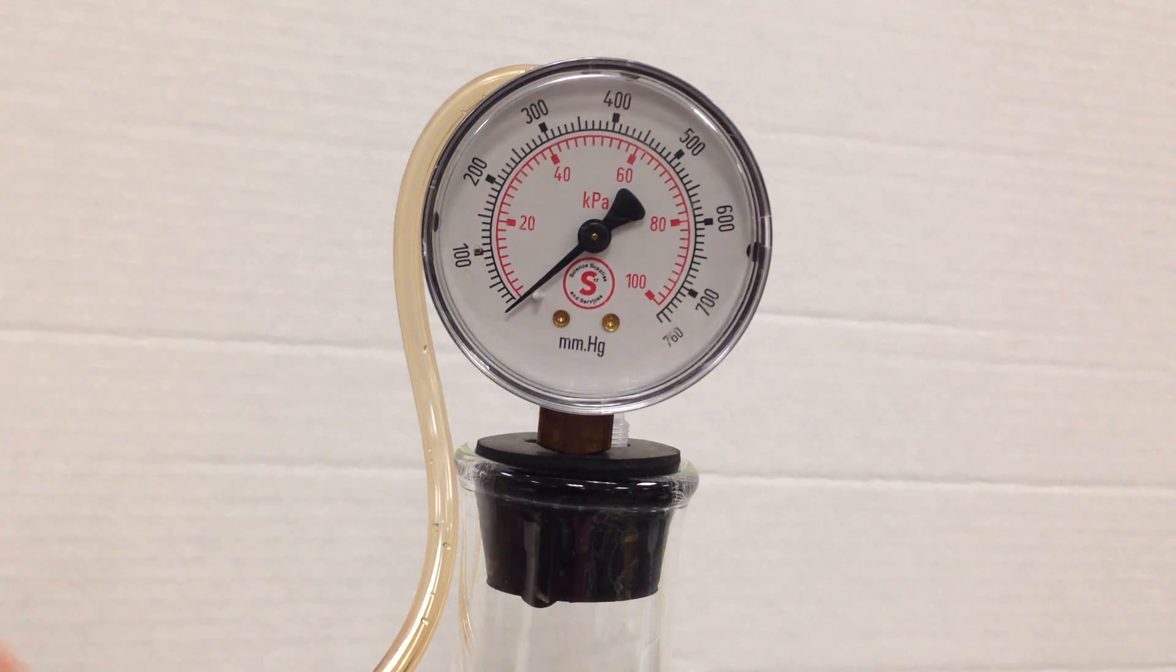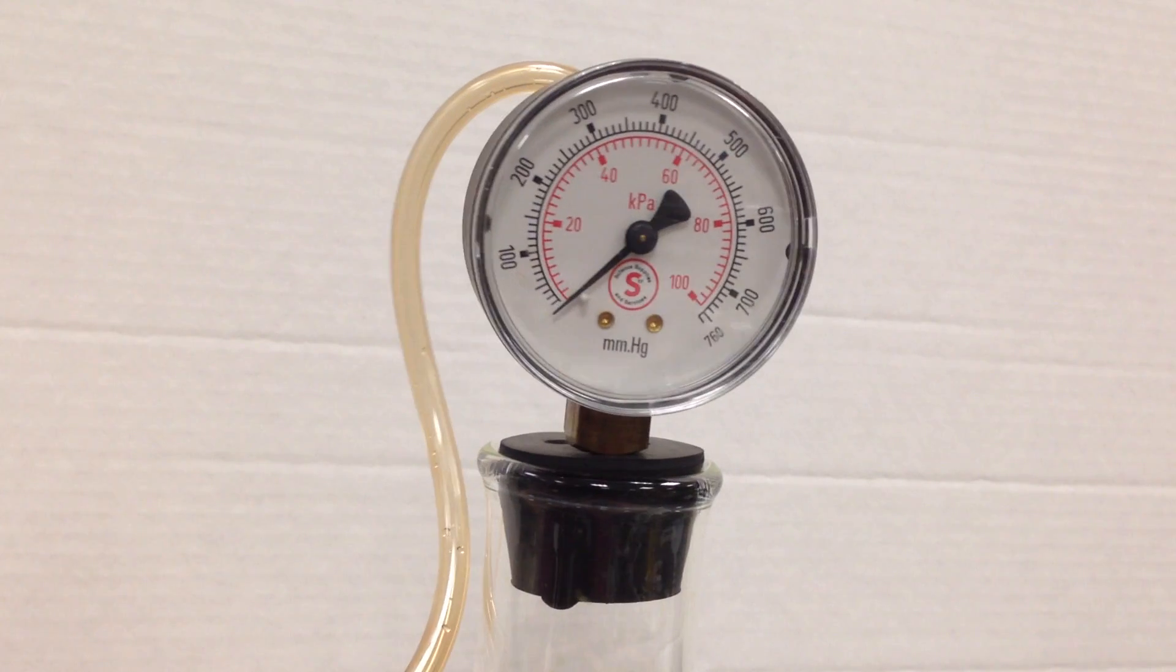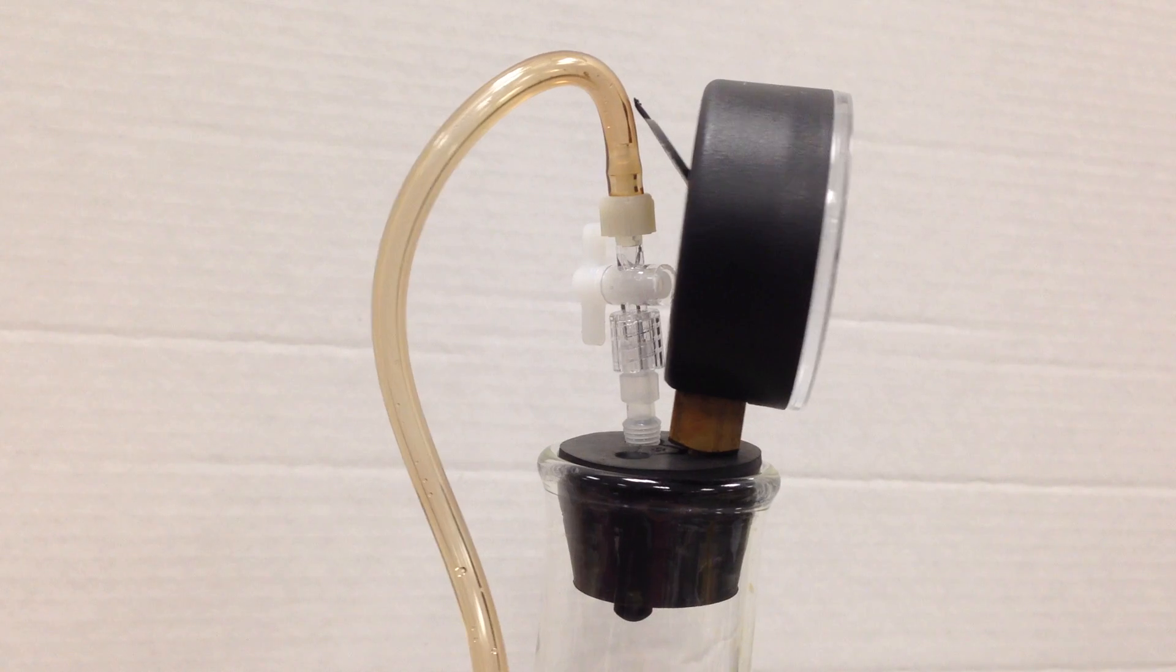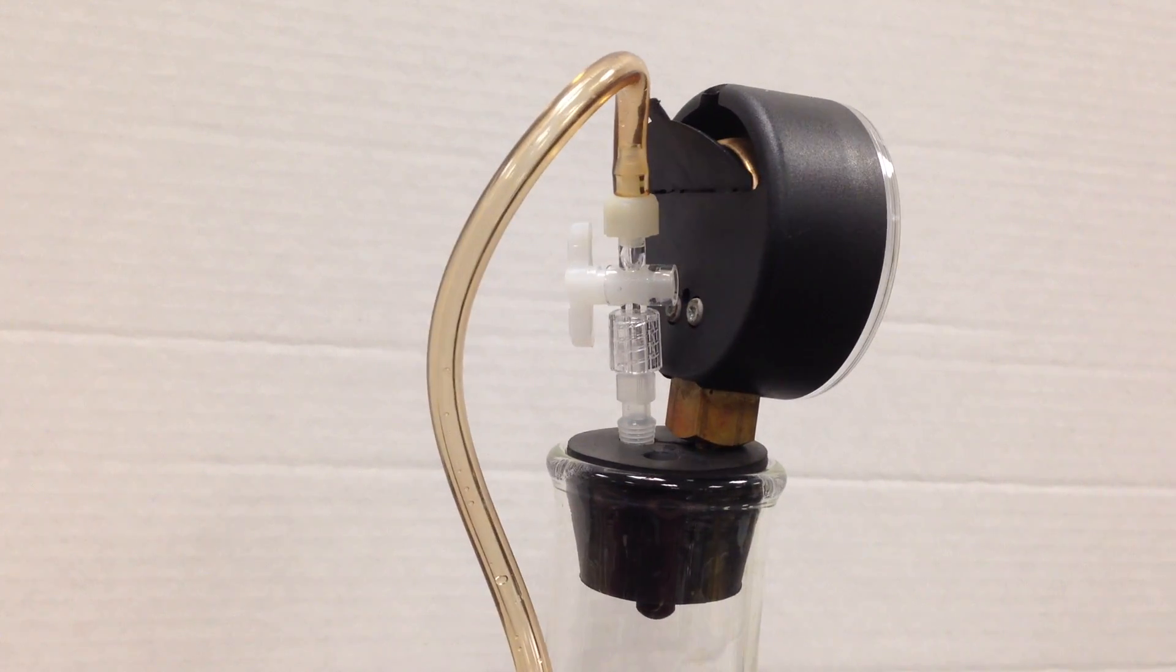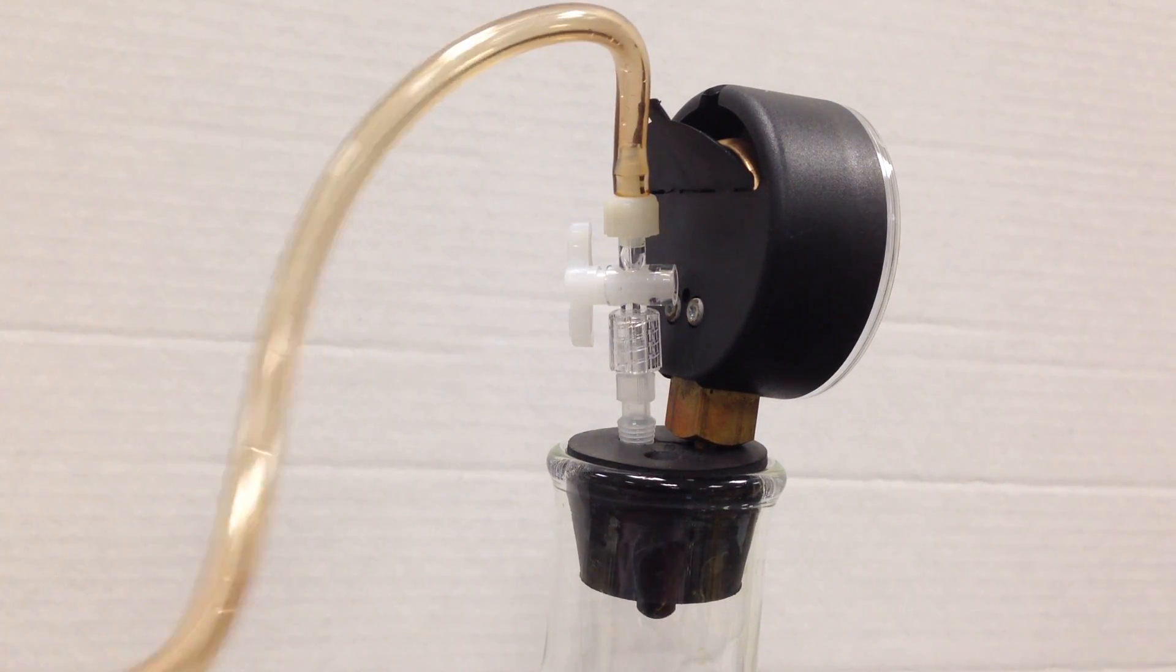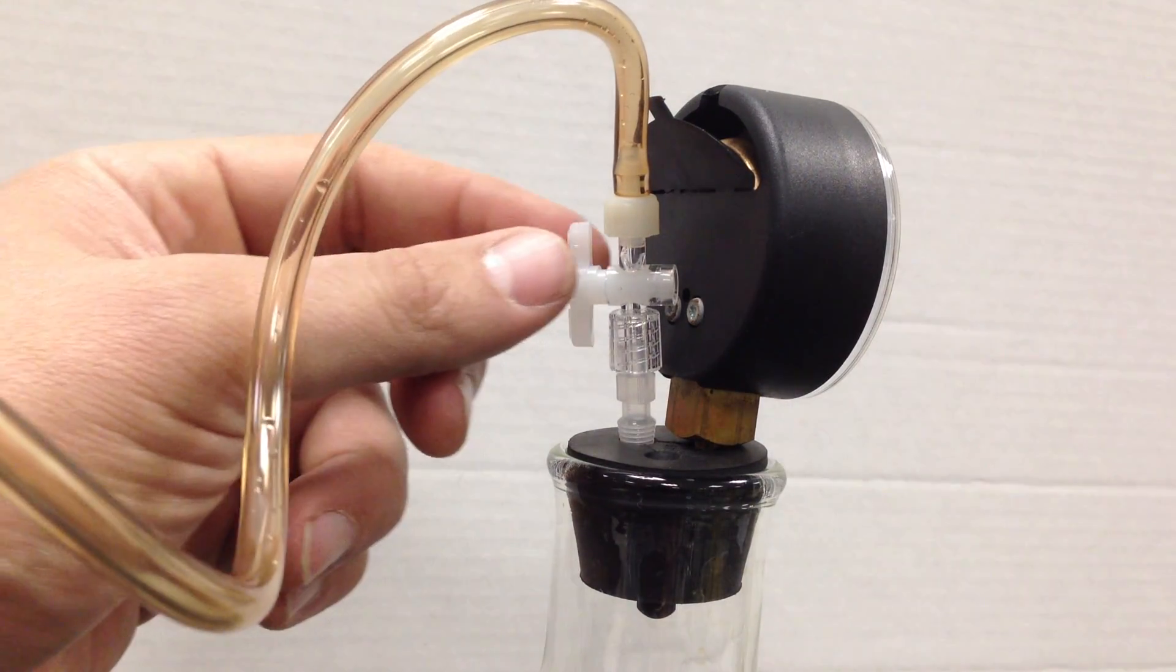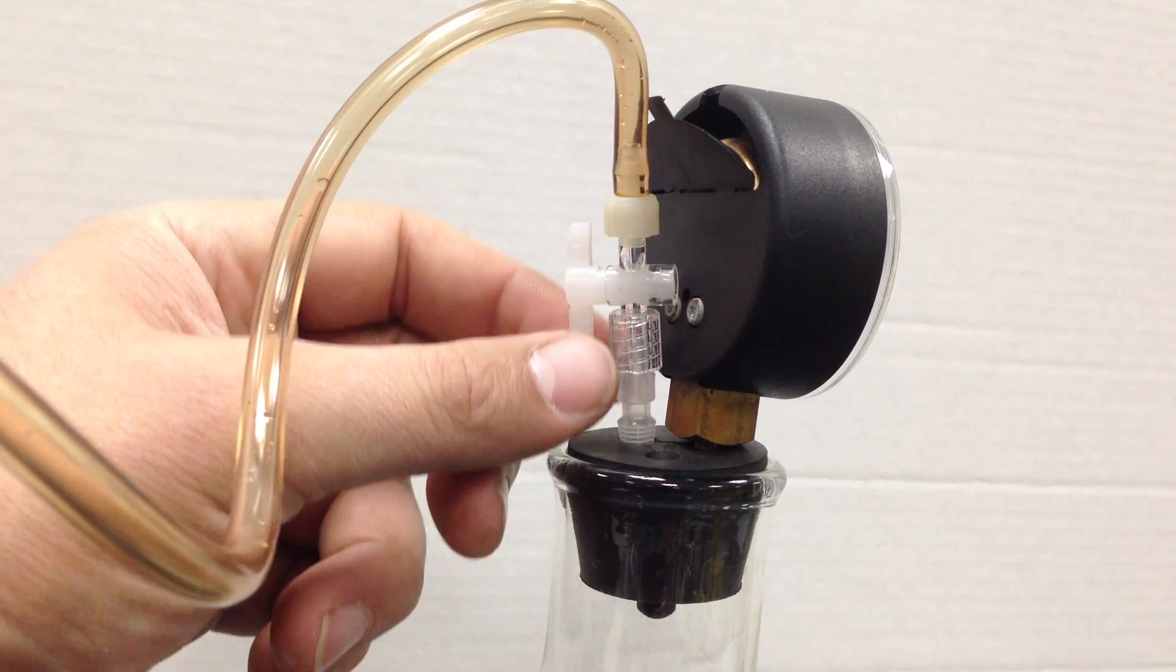Now on top of this Erlenmeyer flask I have the Bourdon tube affixed to a two-hole stopper and I also have a tubing that's connected to a large syringe and I also have a valve here that can shut the pressure.